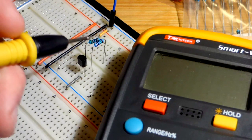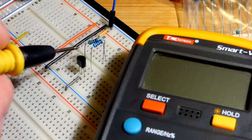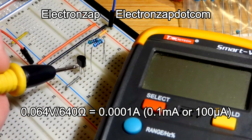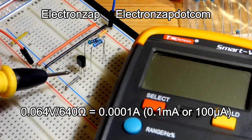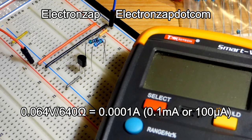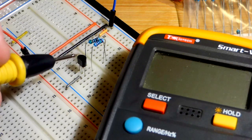So it makes it really easy if your resistors have 64 in the number. So I tried to get 640 ohms of resistance here, because 0.064 divided by 640 is 0.0001, or 0.1 milliamps of current, or 100 microamps of current, however you want to look at it.